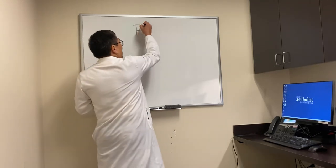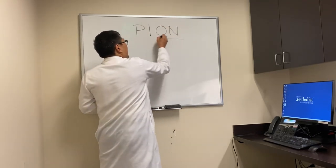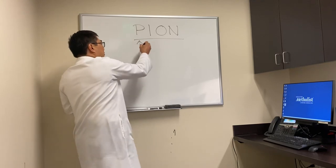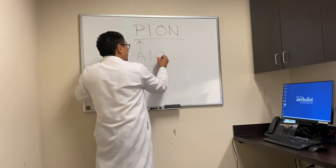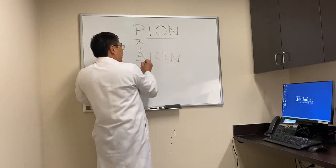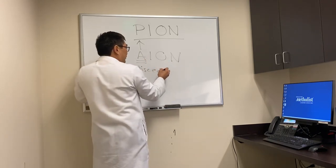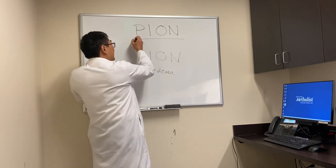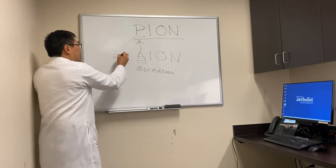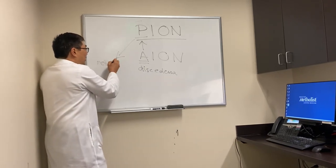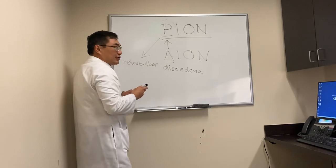Today we're going to talk about posterior ischemic optic neuropathy, and the critical piece is the 'P' — posterior. As opposed to anterior ischemic optic neuropathy where you have disc edema visible during the acute phase, in posterior ischemic optic neuropathy it is a retrobulbar optic neuropathy, which means there's no swelling.